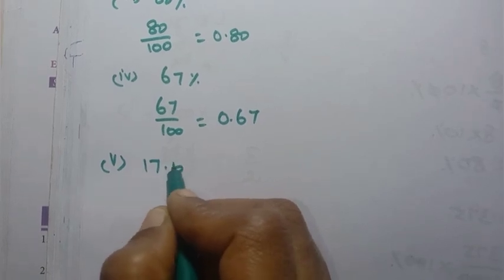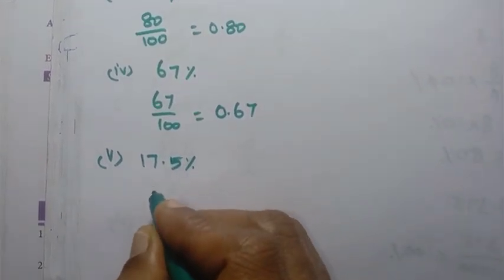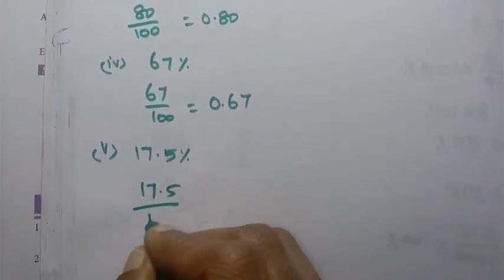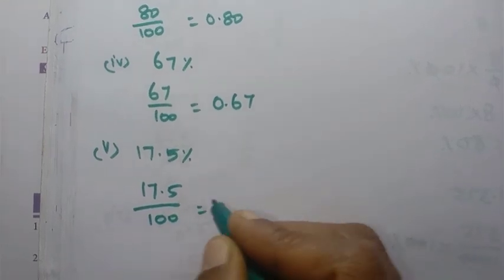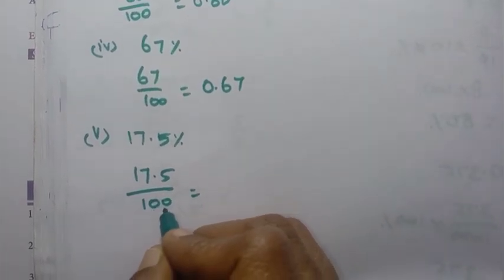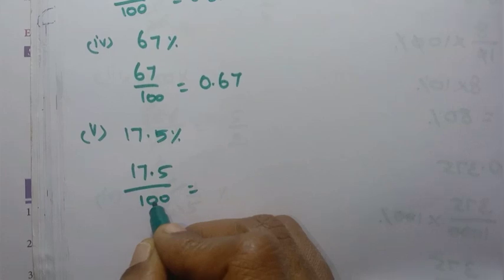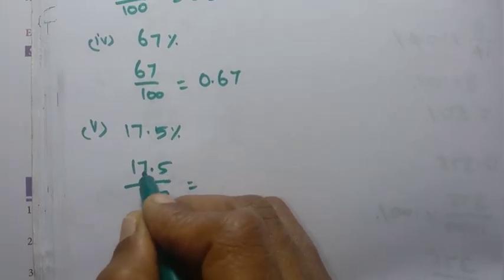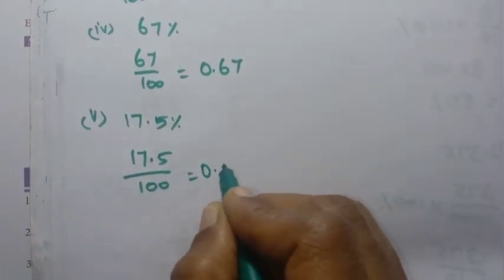Then 5th one: 17.5 percentage. So 17.5 by 100 equal to. So now we have two places. We have already one decimal — 1, 2, 3. So 1, 2, 3.